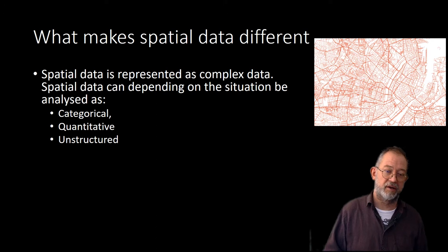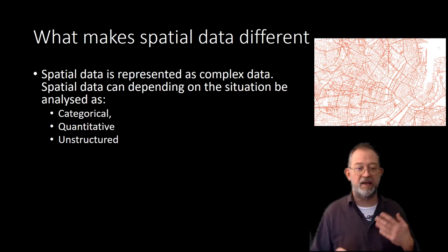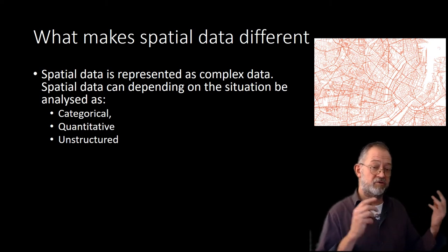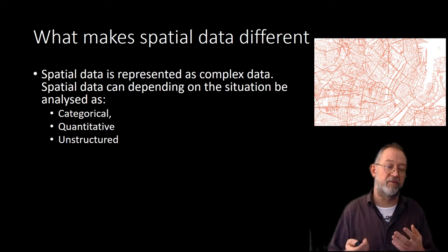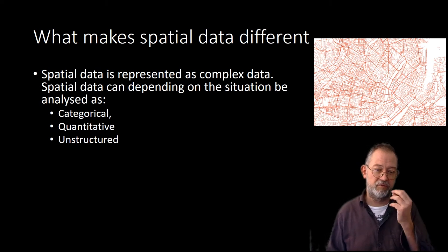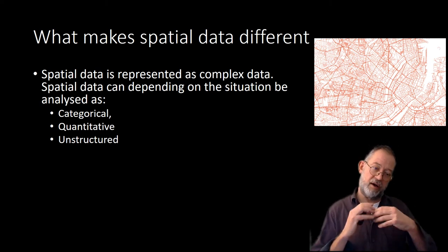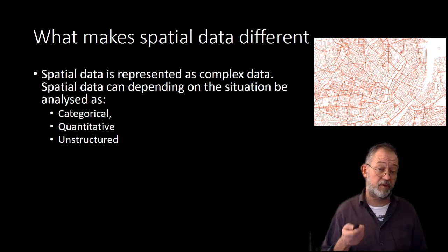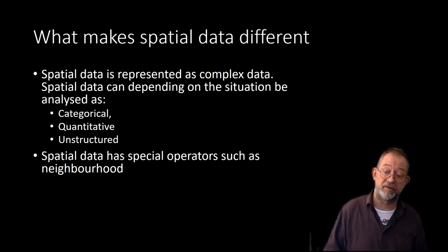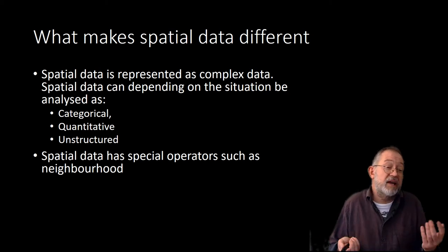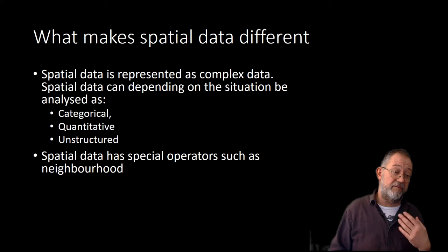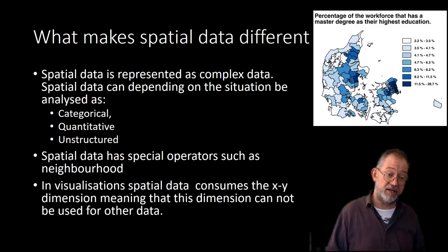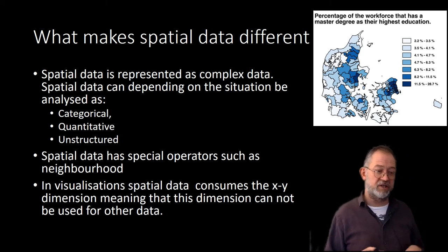Finally, we often face the challenge of describing road layouts across different cities — for example, relating the road layout of Copenhagen to that of New York or London. In that case it becomes unstructured data, requiring advanced algorithms to extract information about the structure embedded in the image. Spatial data also has its own operators: we can talk about neighbors, which is meaningful in very few other data sets. It also has special limitations in visualizations because the x and y dimensions of a visualization are taken up by space.